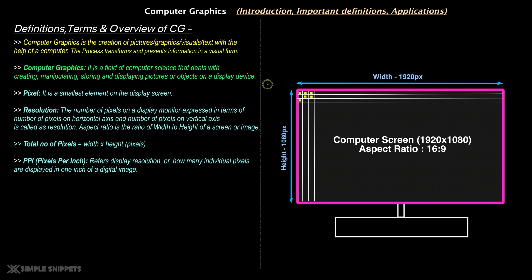Let's first understand what exactly computer graphics is. Even if you're an absolute beginner with no IT or computer science knowledge, just listening to this term should give you some basic understanding. Very loosely, the basic definition of computer graphics is the creation of pictures, graphics, visuals, and text with the help of a computer.